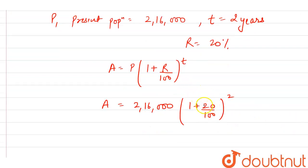If we solve, 20 and 100 simplify to 1/5, so we get 2,16,000 times (6/5) whole square.